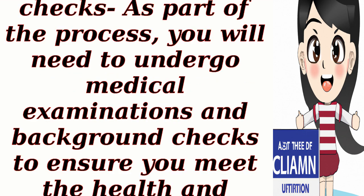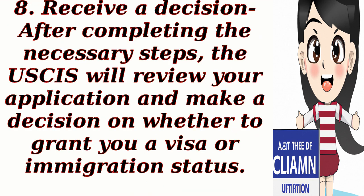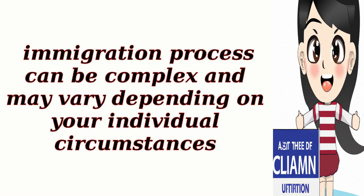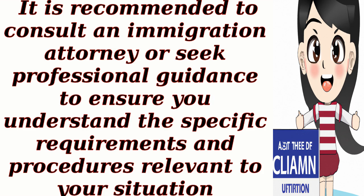7. Undergo medical and background checks: As part of the process, you will need to undergo medical examinations and background checks to ensure you meet the health and character requirements. 8. Receive a decision: After completing the necessary steps, the USCIS will review your application and make a decision on whether to grant you a visa or immigration status. It is important to note that the U.S. immigration process can be complex and may vary depending on your individual circumstances. It is recommended to consult an immigration attorney or seek professional guidance to ensure you understand the specific requirements and procedures relevant to your situation.